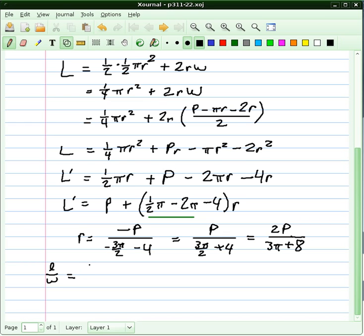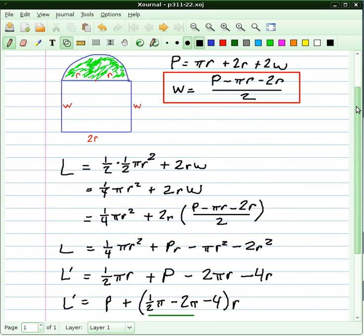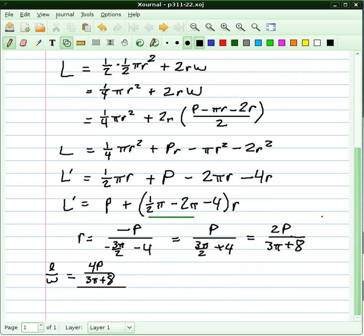Well, 2r is just going to be double that quantity that we just found, so I'm going to put 4P over 3π plus 8, and w we found way up top was P minus πr minus 2r over 2.